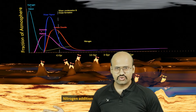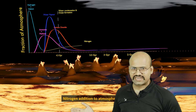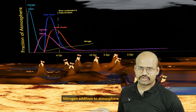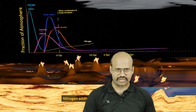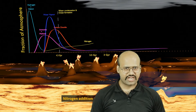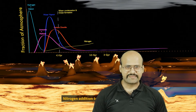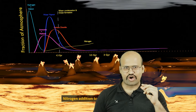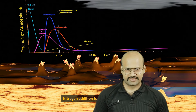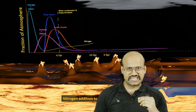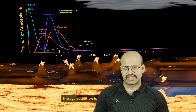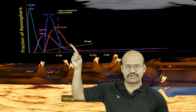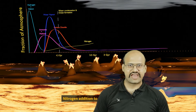During this process, nitrogen was also added to our atmosphere by volcanoes. Nitrogen is emitted by volcanoes in a very small fraction, but their continuous emission increased the level of nitrogen in our atmosphere.